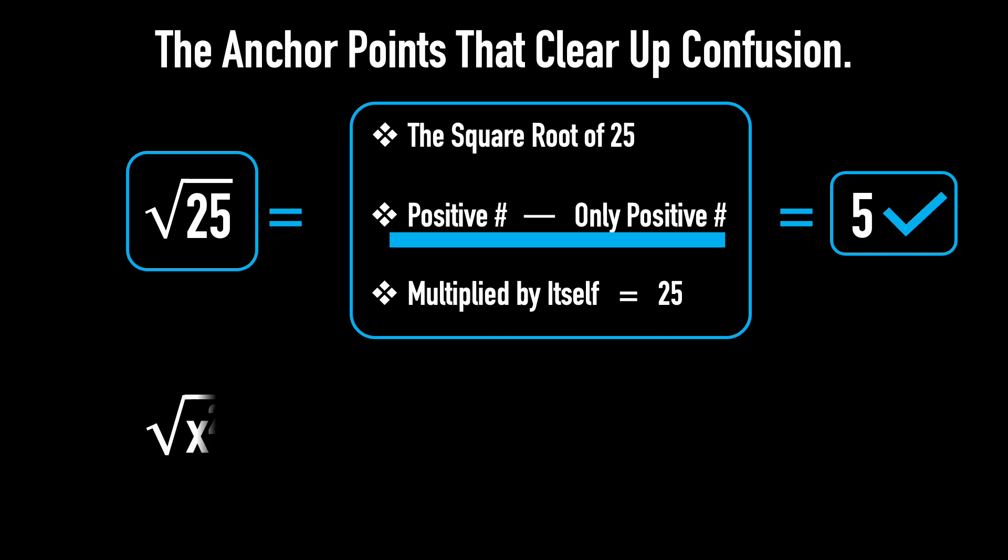Let's determine the square root of x squared. We know x multiplied by itself gives x squared. However, we don't yet know whether x is positive or negative. So the square root of x squared is the absolute value of x because it's always positive, and when multiplied by itself, it gives x squared.